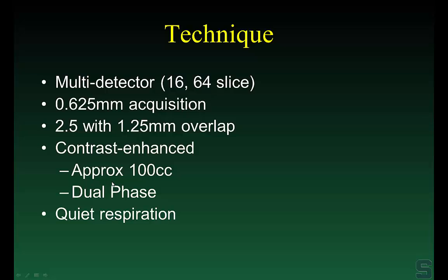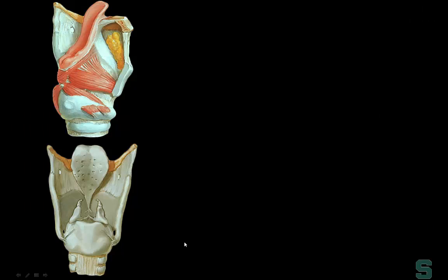Part of the reason for dual phase is that with multi-detector CT — even a 64-slice scanner — the scan takes about eight seconds. When 64-slice MDCT first came out, everyone was getting CTAs on all neck CTs, so we had to throttle back. That's why we use the dual phase. We do everything with quiet respiration, not Valsalva or other laryngeal maneuvers.